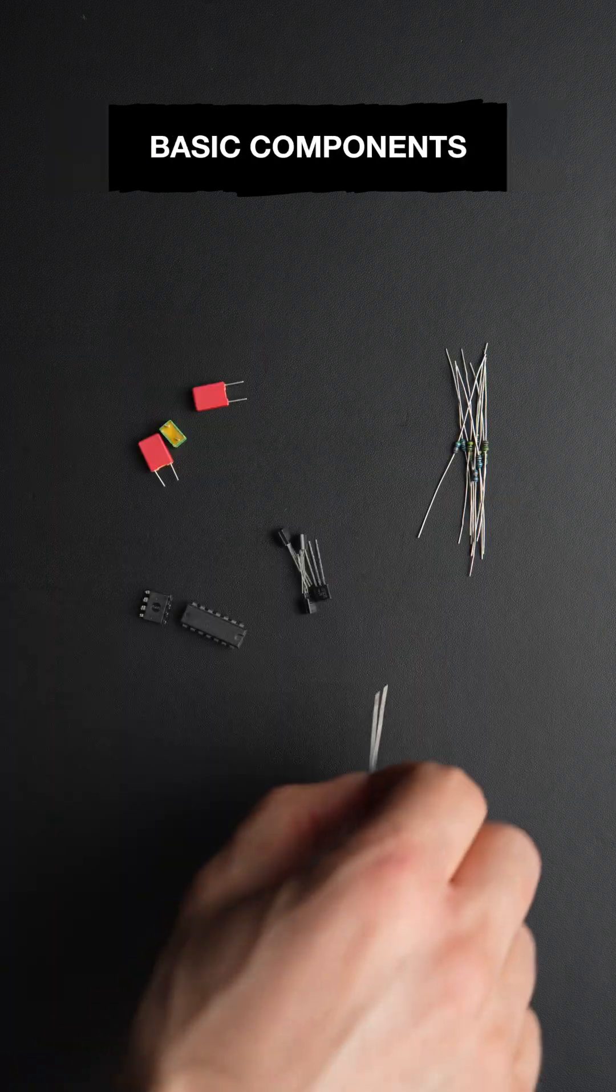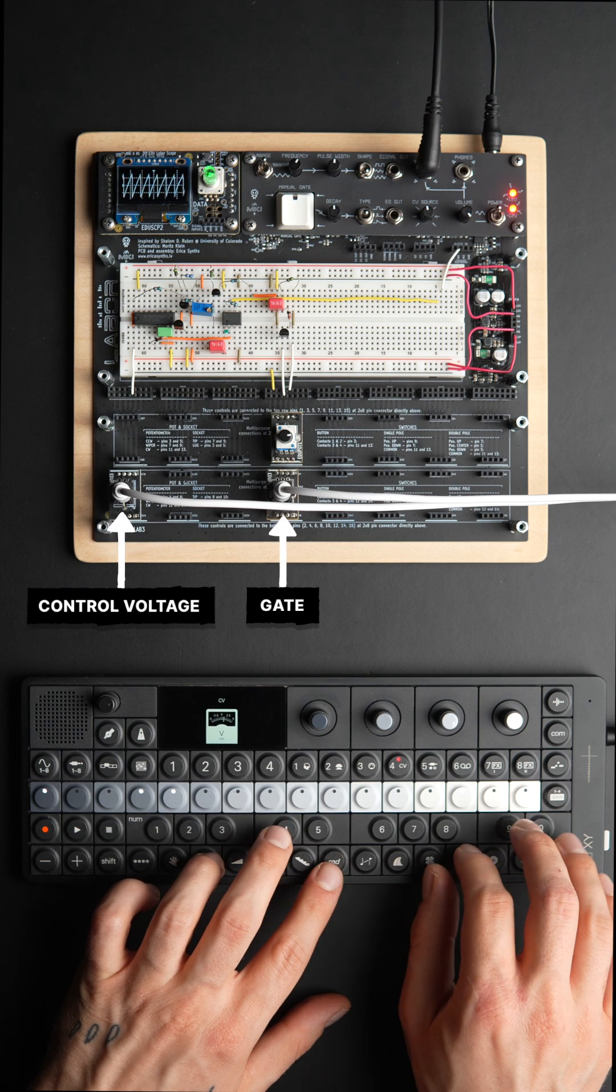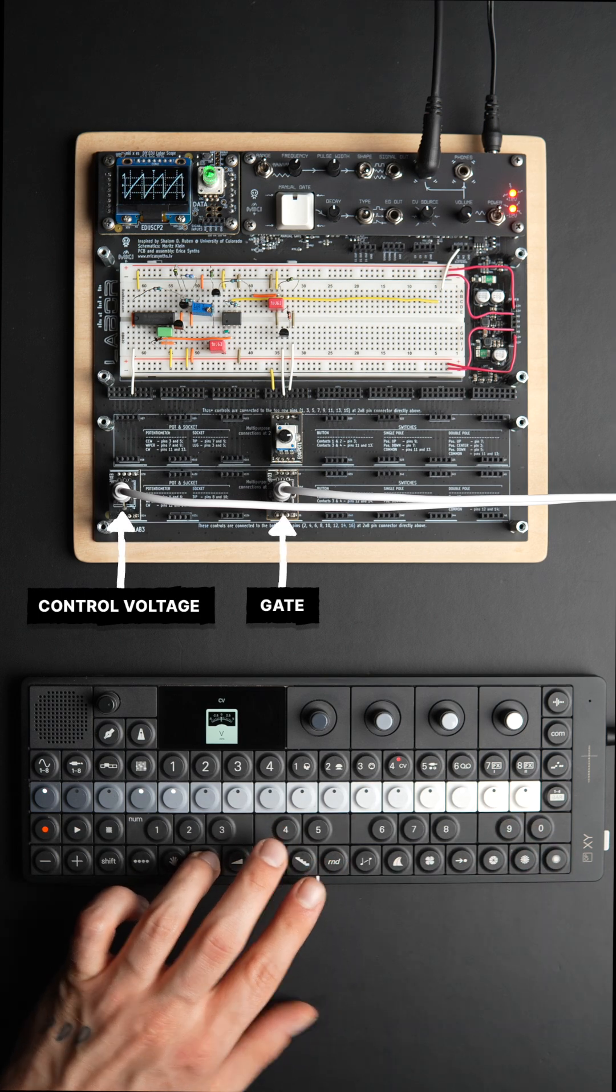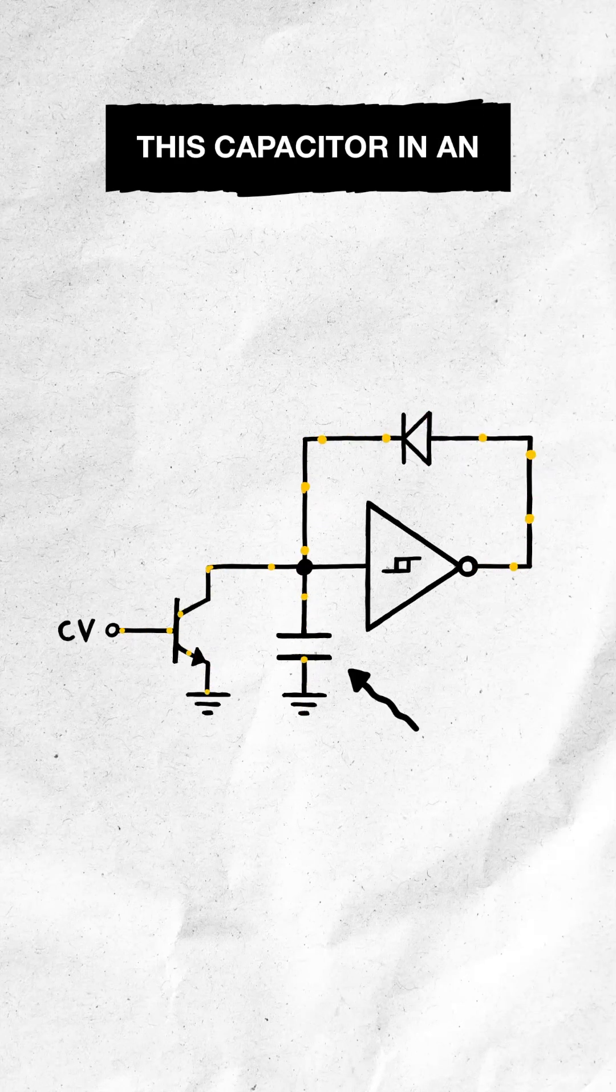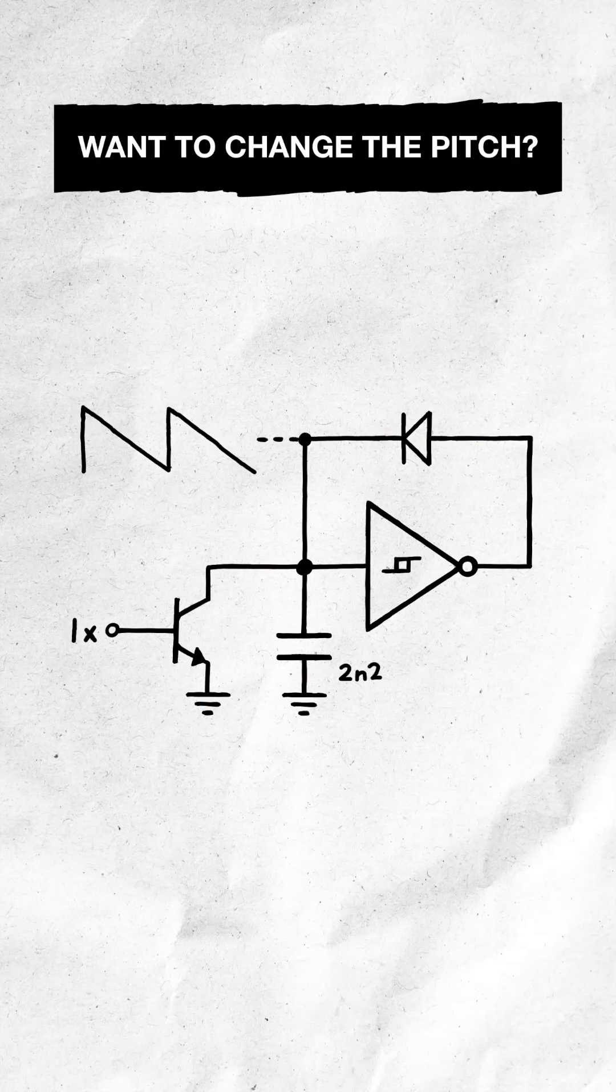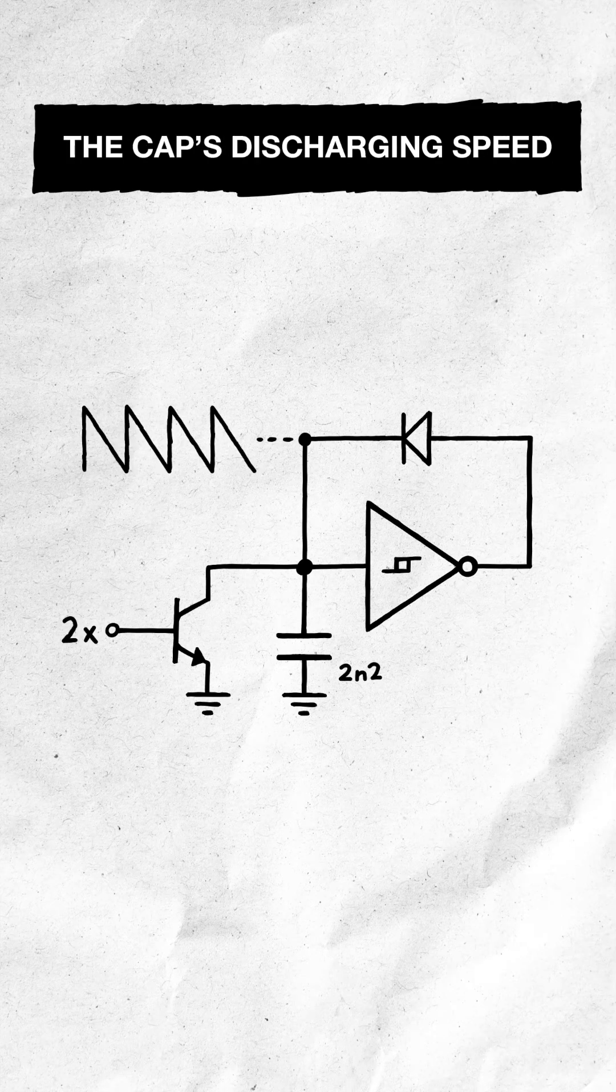Here's how you turn a few basic components into a real analog synthesizer. This is the VCO. It works by charging and discharging this capacitor in an endless loop. Want to change the pitch? Simply adjust the transistor's base voltage to control the cap's discharging speed.